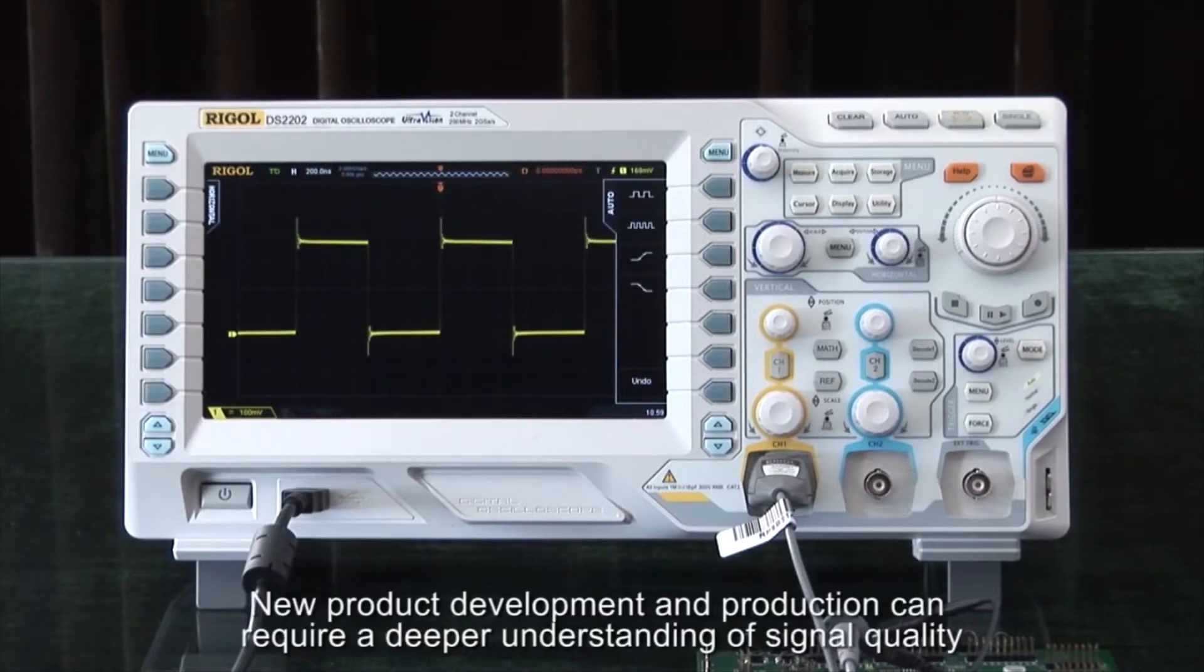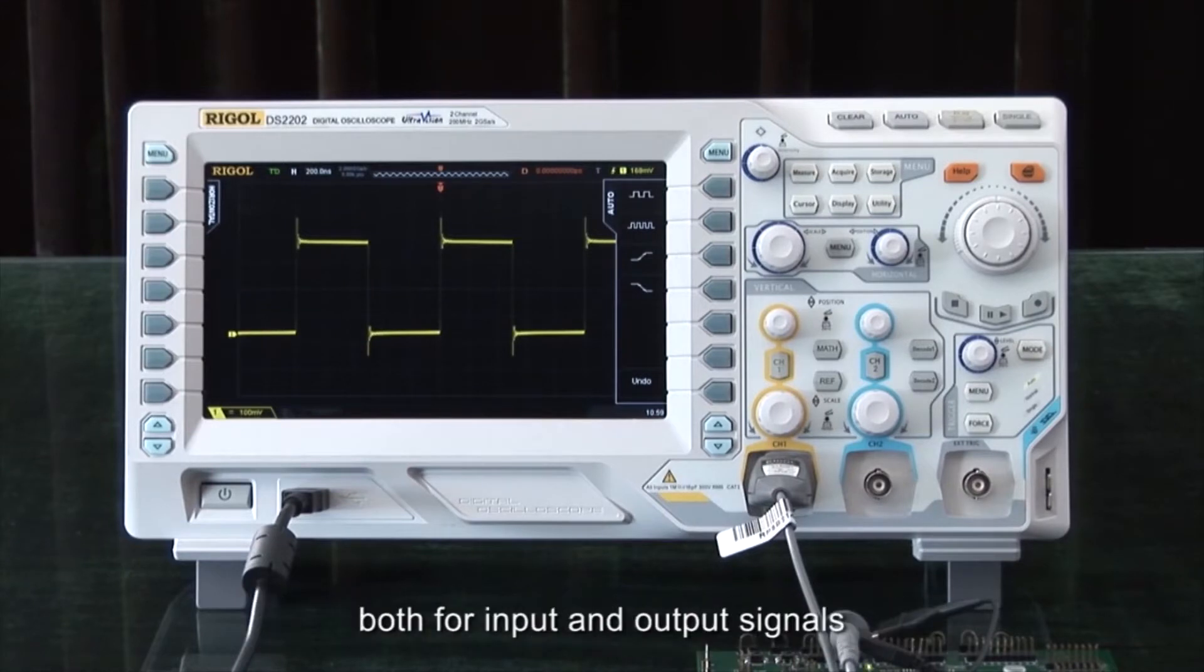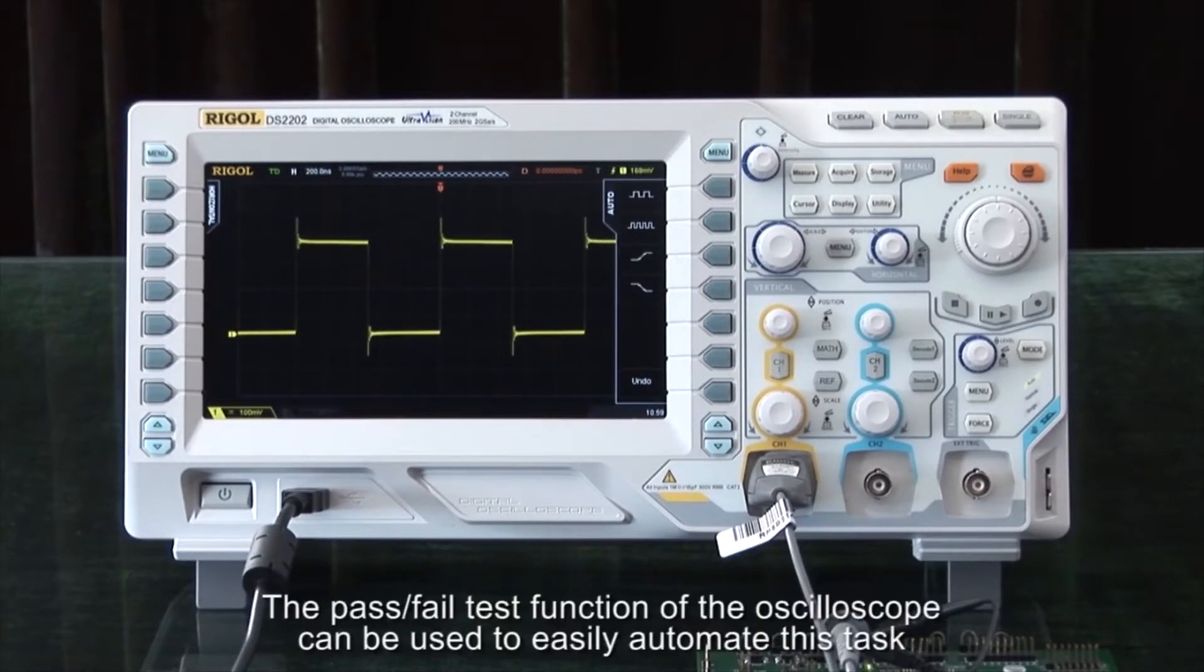New product development and production can require a deeper understanding of signal quality, both for input and output signals. The pass-fail test function of the oscilloscope can be used to easily automate this task.